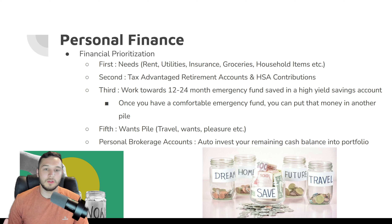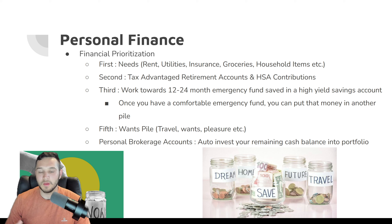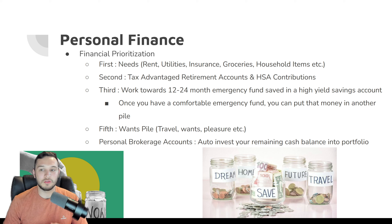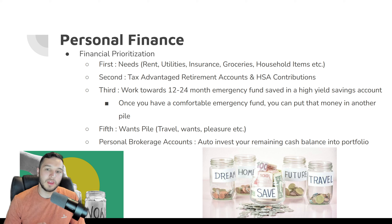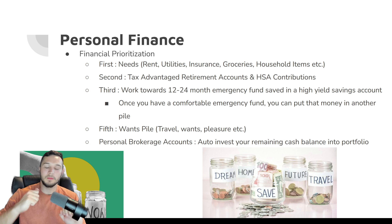Here's a personal finance flow commonly recommended for figuring out priorities. When money comes in, first prioritize essentials and needs: rent, utilities, groceries, car insurance, gasoline — things you need. Second, take full advantage of any tax-advantaged retirement accounts you have. If you have an employer-sponsored 401k with a 5% employer match, at minimum contribute that 5%, because if you're not, you're leaving free money on the table — your company is literally paying you dollar-for-dollar up to that 5%.